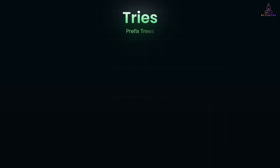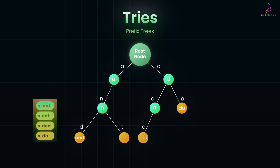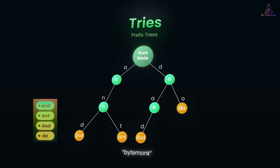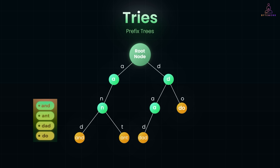And that's where tries, or prefix trees, come into play. A trie is a tree-like structure that organizes strings by their shared prefixes. Instead of storing each username as a whole, it breaks them down character by character and builds a path through the tree. This allows lookups in O(M) time, where M is the length of the string, no matter how many total usernames we have. So even with billions of entries, checking a username like ByteMonk takes time proportional to its length, not the size of the entire dataset. Tries naturally support prefix-based queries and autocomplete, making them ideal for suggesting usernames when a user's first choice is already taken. Usernames with shared prefixes reuse the same path — for example, ByteMonk and ByteMonk_IO share the same ByteMonk branch, reducing redundancy.